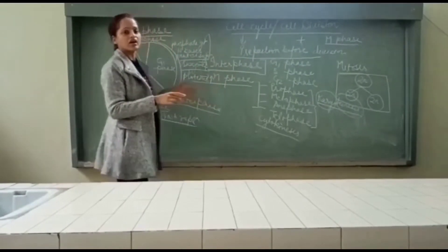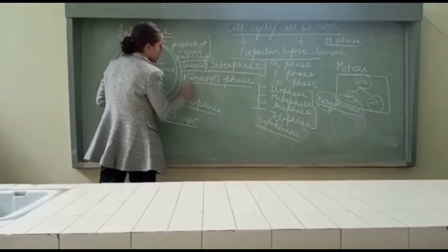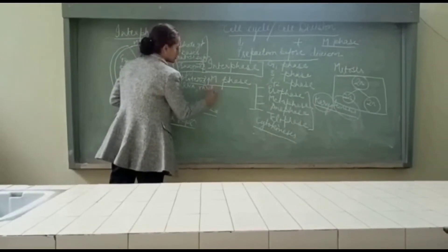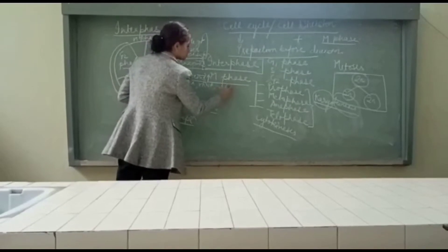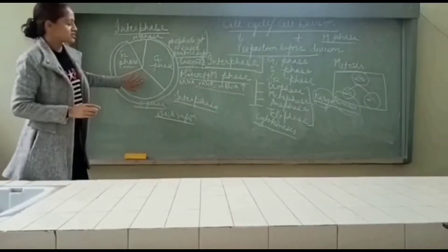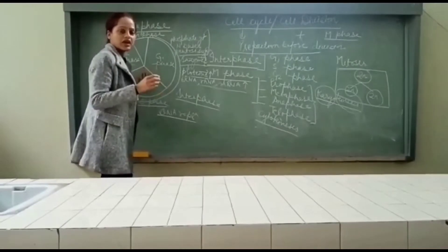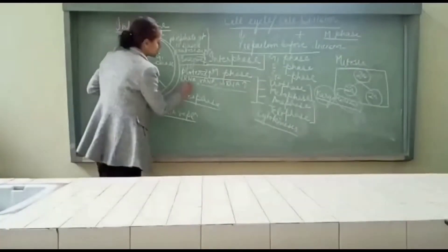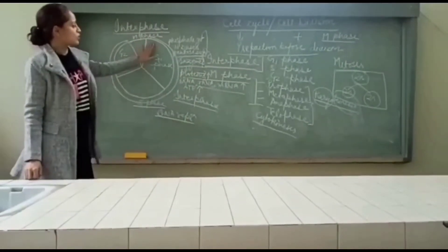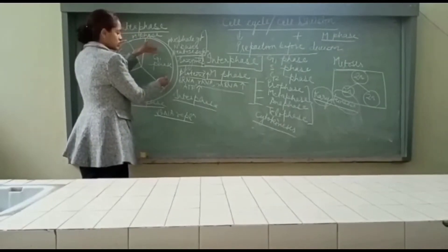In transcription we need mRNA, rRNA, and tRNA — so all three kinds of RNA will get synthesized. All the processes which are going to happen in the next phase will need a large amount of energy, so synthesis of ATP also takes place. This was all about the G1 phase. G1 phase represents the preparation for the S phase.